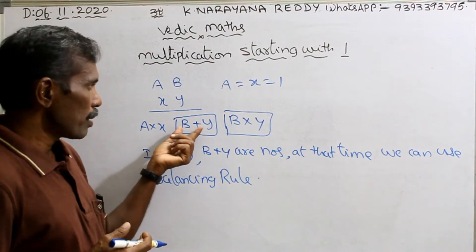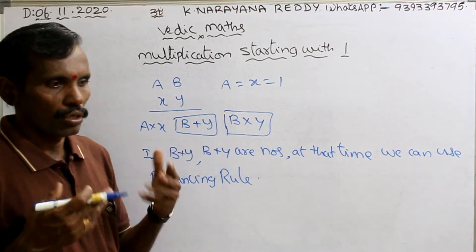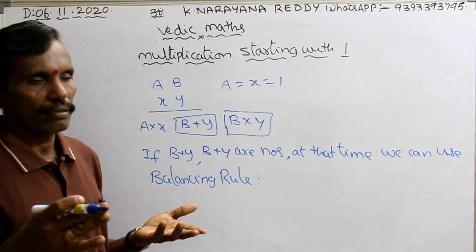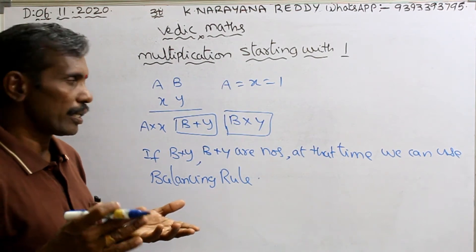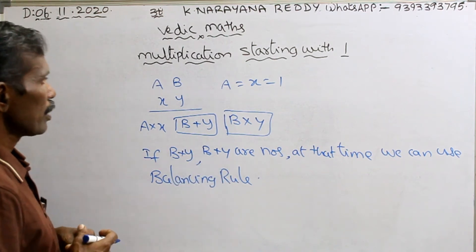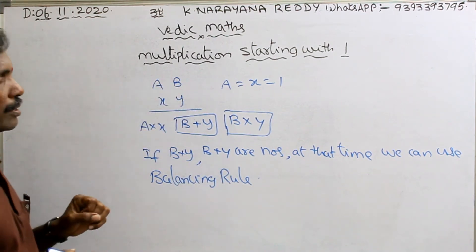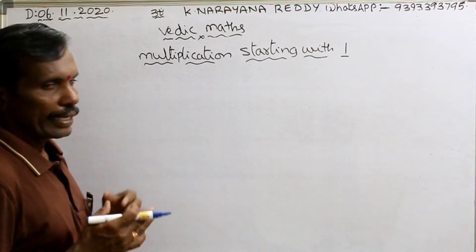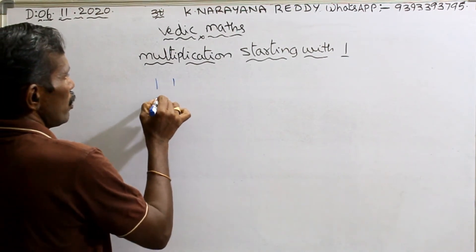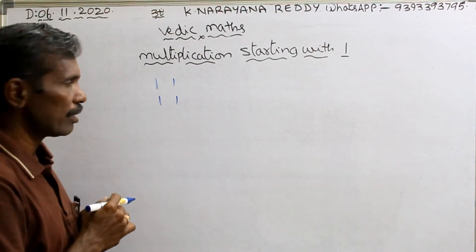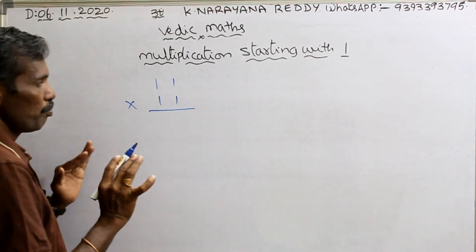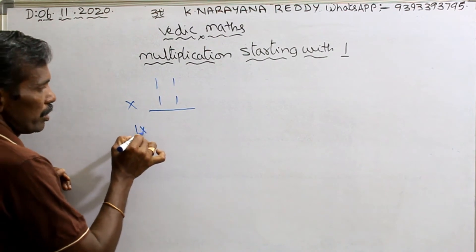Whenever b plus y and b into y comes to more than 9 — that means 10 or above — at that time you can use the balancing rule. Now take a number starting with 1. Suppose 11 into 11. Simple logic: first one is this one, next addition, next multiplication.